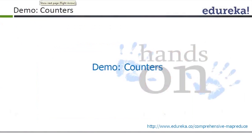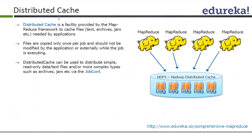Now let's talk about distributed cache. Cache is a facility provided by the MapReduce framework to cache files so you don't have to read them every time. You can cache text files, archives, and JAR files needed by your application. Files are copied only once per node across multiple map tasks, and should not be modified while the job is running. After the job finishes, the cache is removed.